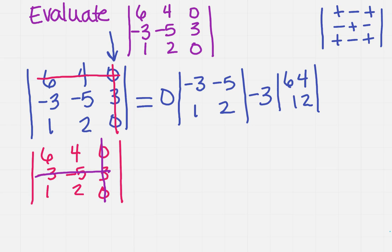So now what about the last one? Well, I'm going to go ahead and redraw it because I want to make sure that you can see it. So I've got 6, 4, 0, -3, -5, 3, 1, 2, 0.